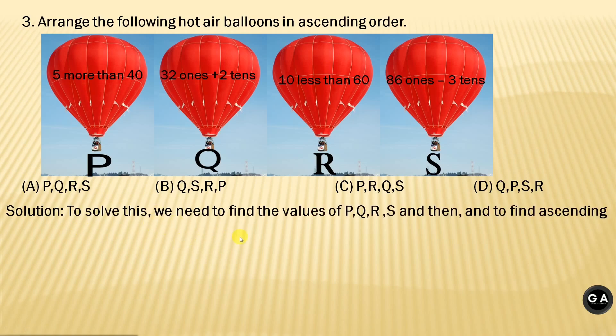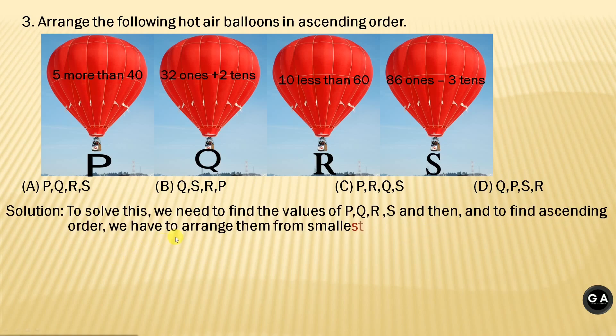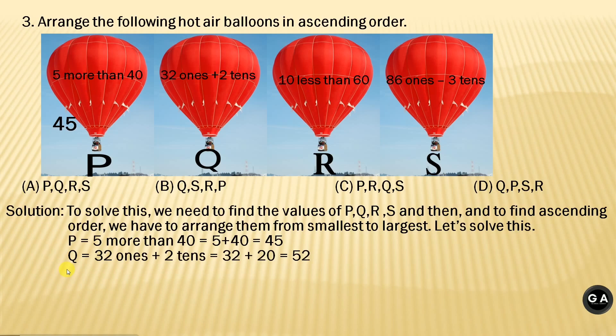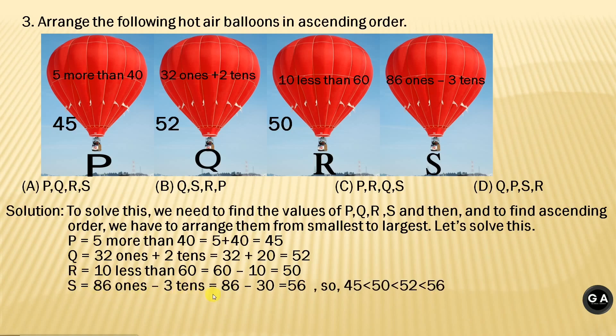Solution: to solve this, we need to find the values of P, Q, R, and S. And then, to find ascending order, we have to arrange them from smallest to largest. Let's solve this. P equals 5 more than 40 equals 5 plus 40 equals 45. Balloon Q equals 32 ones plus 2 tenths equals 32 plus 20 equals 52. Balloon R equals 10 less than 60 equals 60 minus 10 equals 50. Balloon S equals 86 ones minus 3 tenths equals 86 minus 30 equals 56.